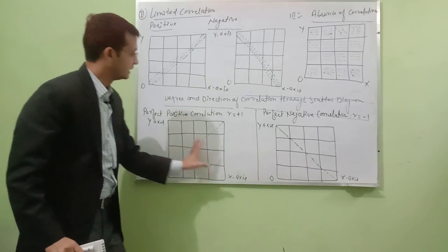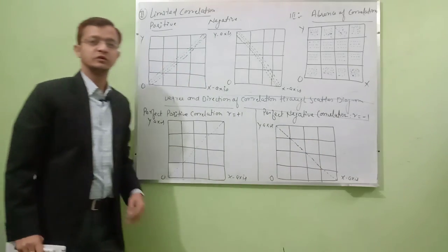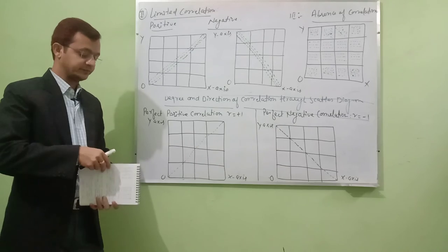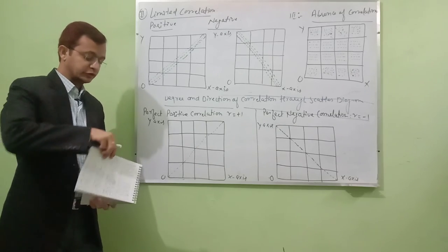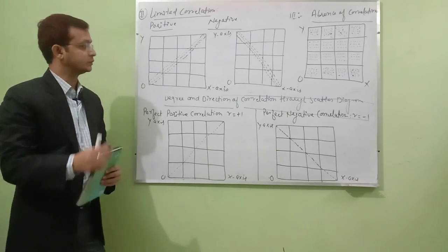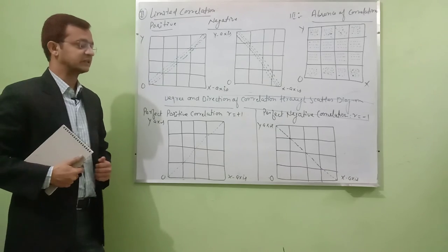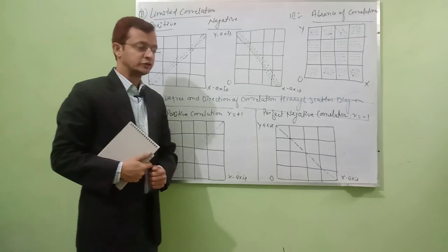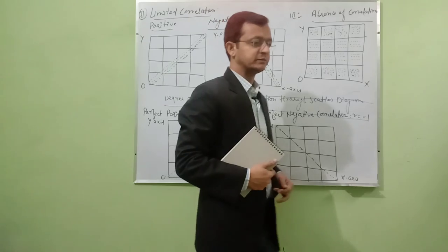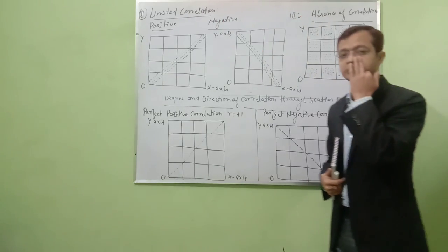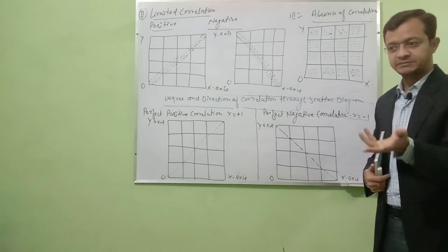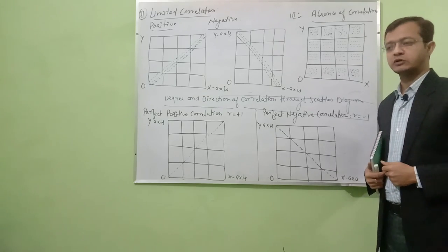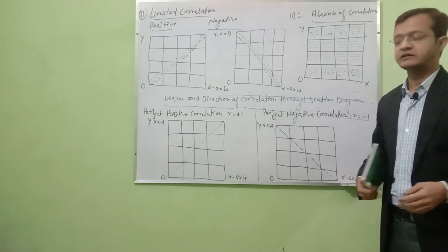So this is the absence of correlation. This is limited correlation. And this is perfect correlation. This completes the scatter diagram method. Next is the correlation graph, which will be covered later. After that comes the mathematical method, which has three methods: first, Karl Pearson's coefficient of correlation; second, rank coefficient of correlation; and third, concurrent deviation method.